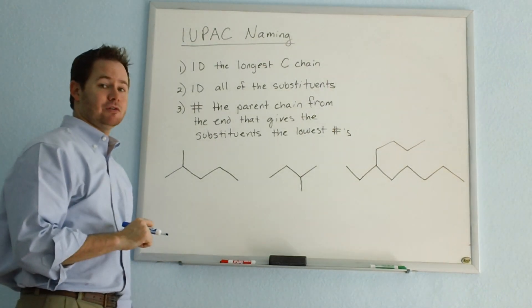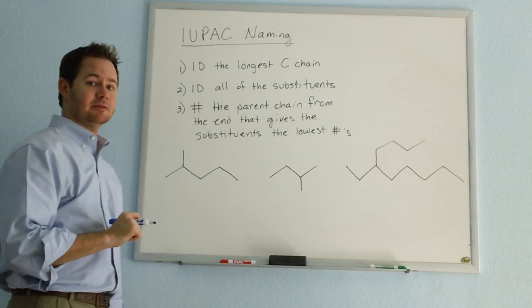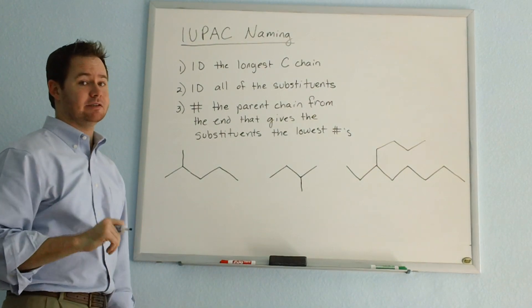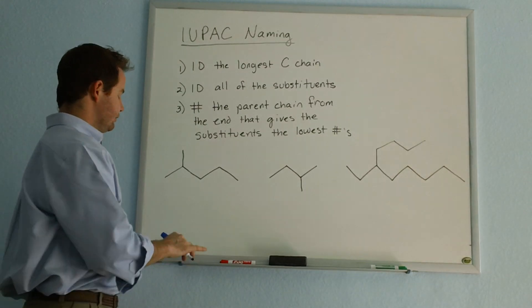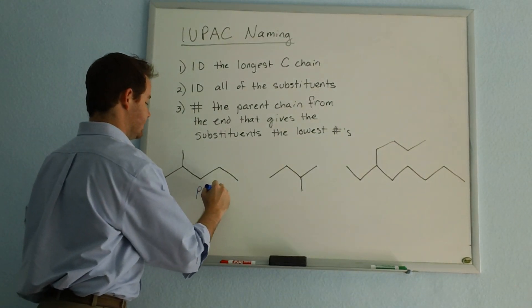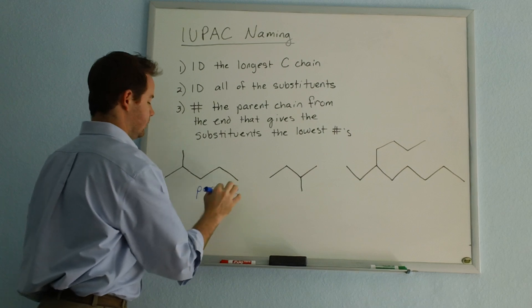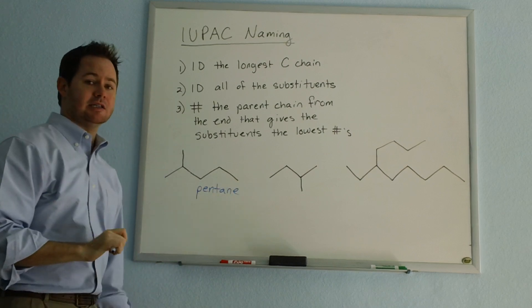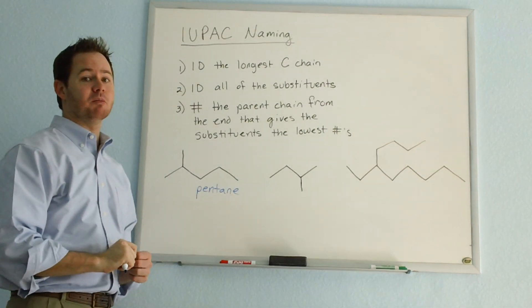What's the prefix for a five carbon compound? If you said pent, you are correct. Pent is the prefix for five carbons, so this will be a pentane. The ane comes from the fact that it's an alkane, which means all single bonds.